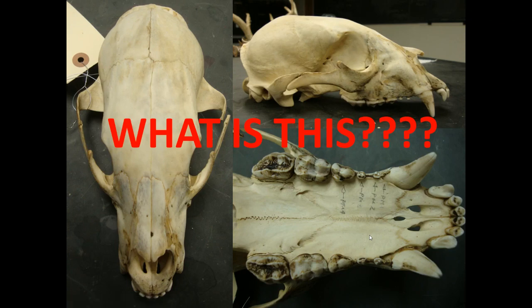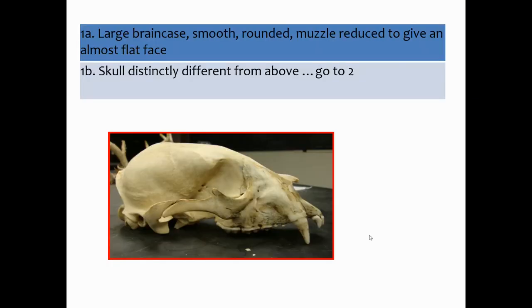Dichotomous keys help you look at characteristics and give you a pair of choices, and then you go one choice or the other. The questions are usually framed as couplets, which are two choices that are mutually exclusive. Depending on which one you choose, you then go to the next number or whatever number is given.